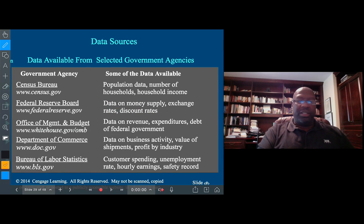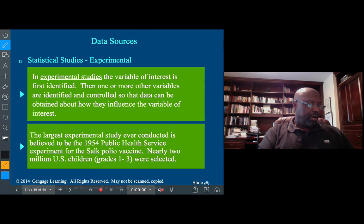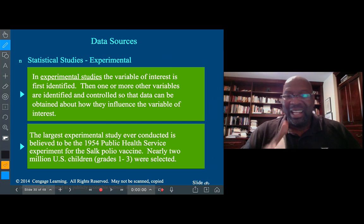Other sources from government agencies, we could see some of the Census Bureau, Federal Reserve Board, etc. Now in statistics we tend to do observational studies and experimental studies. An experimental study is one where we design an experiment and we try to control some of the variables.